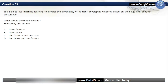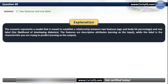Question 39. You plan to use machine learning to predict the probability of humans developing diabetes based on their age and BMI. What should the model include? Options: A. Three features, B. Three labels, C. Two features and one label, or D. Two labels and one feature. The correct option is C — two features and one label. The features are descriptive attributes (age and BMI) while the label is the characteristic you are trying to predict (probability of developing diabetes).